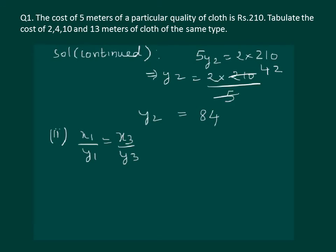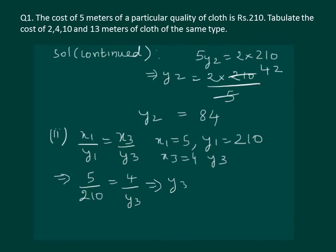Similarly to find the value of y3 we can take x1 by y1 is equal to x3 by y3 where x1 is equal to 5, y1 is equal to 210, x3 is equal to 4 and we have to calculate y3. On substituting the values we get 5 by 210 is equal to 4 by y3. Again by cross multiplying and solving we will get y3 is equal to 4 into 210 by 5 and on solving we will get y3 is equal to 168.